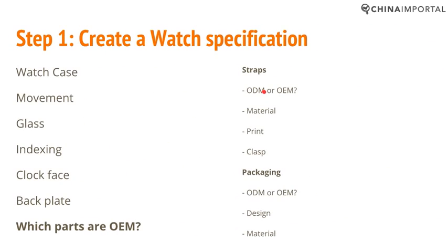Suppliers in every industry, including the watch industry, make the product according to the buyer's specification. There is no real difference between supplier A and supplier B in terms of the quality they can offer. Instead it really comes down to what you specify — the spec sheet. To get your product right, you need to give them a spec sheet. They won't provide a template; they expect you as the buyer to already know how you define quality for a wristwatch.